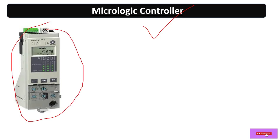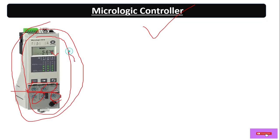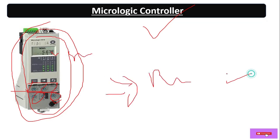Another part is the micro logic controller. With the help of this controller we can set the instantaneous current for overload, short circuit, and earth leakage with timers. We can set the parameters as per the ratings and load connected on that breaker.